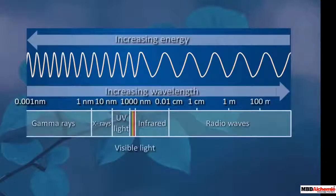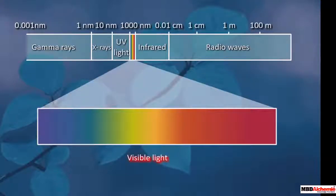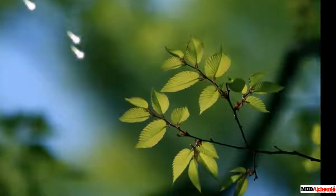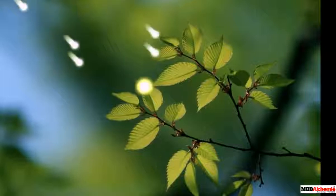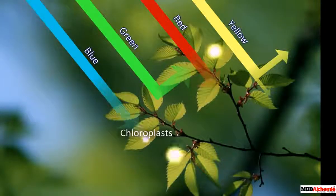Green plants use only a small portion of the electromagnetic spectrum called visible light. The chemical reactions of photosynthesis occur within plant cells in specialized structures known as chloroplasts.